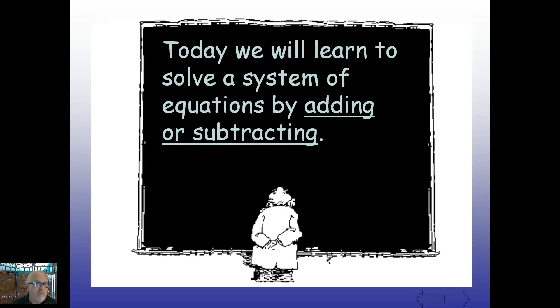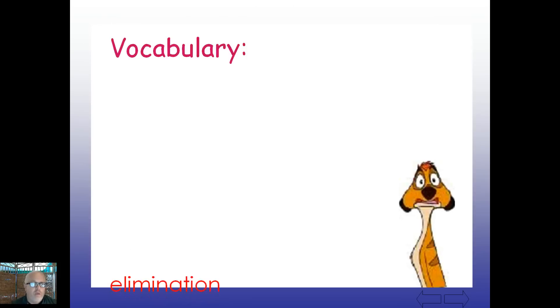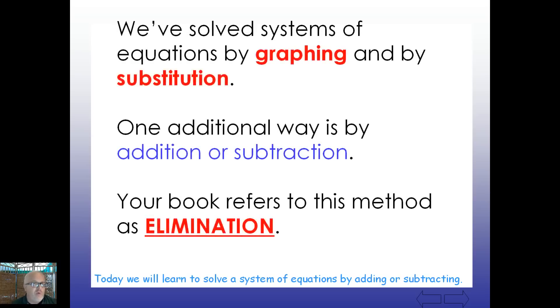All right, today we'll learn to solve a system of equations by adding or subtracting. So let's take a look here. We have this word called elimination. If any of you have played sports or watched sporting events, you know what elimination round might mean. The playoffs or a team is eliminated simply means they're out. They no longer are participating. So we've solved systems equations by graphing and by substitution. And an additional way is by addition or subtraction. Your book refers to this method as elimination method.